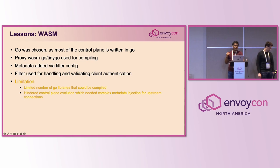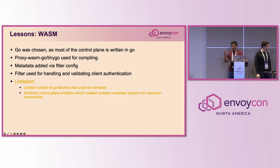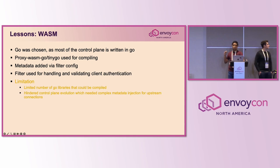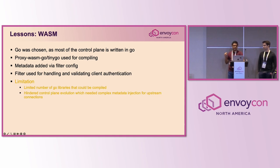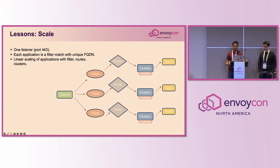Why did we go with WASM and Go? Most of our control plane components were written in Go and we wanted to reuse those libraries. We compiled with proxy-WASM / TinyGo for the WASM parts. We hit two limitations: not all libraries can be compiled with TinyGo, and our control plane was evolving rapidly, making it tedious to inject all the metadata via filter config.